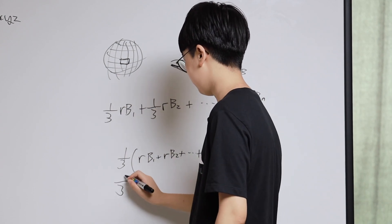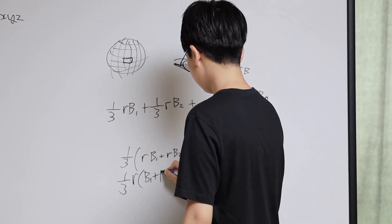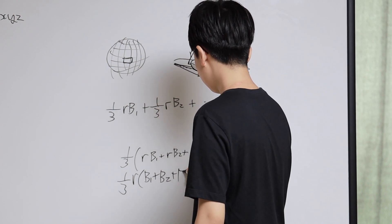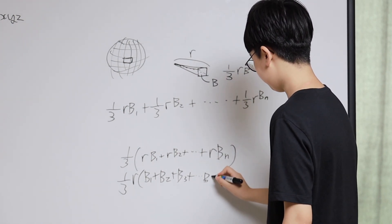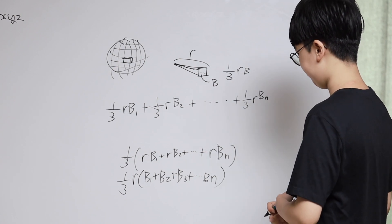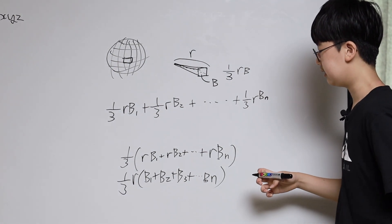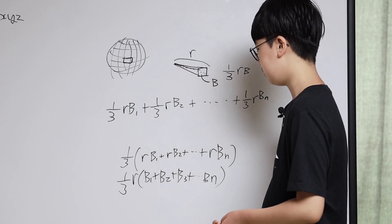So, a third of R multiplied by B1, B2, B3, plus and so on, Bn. That n's a bit big, but anyways.